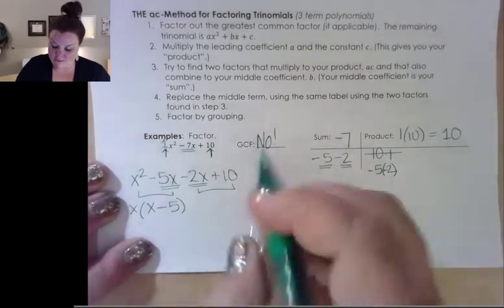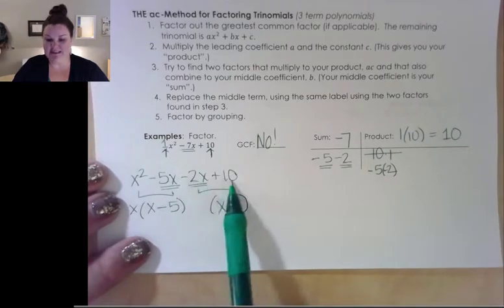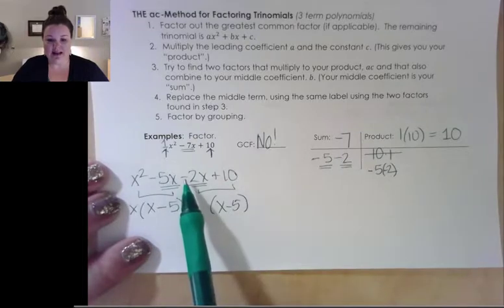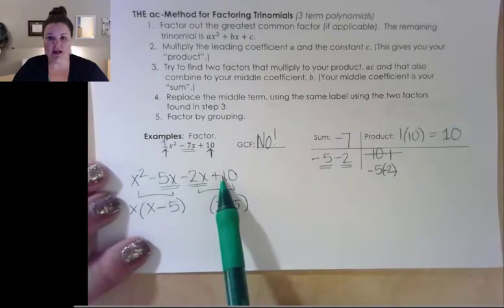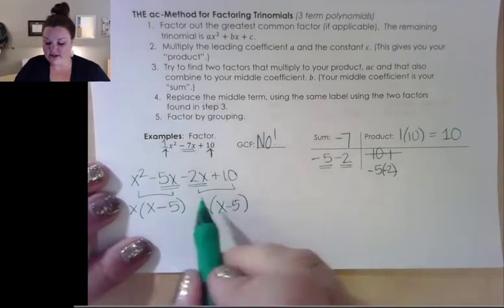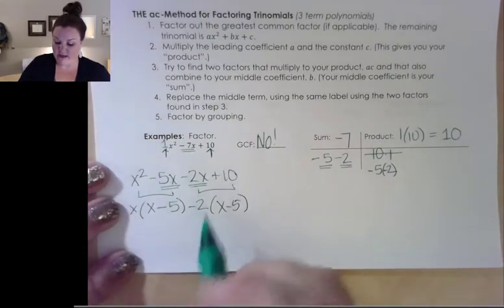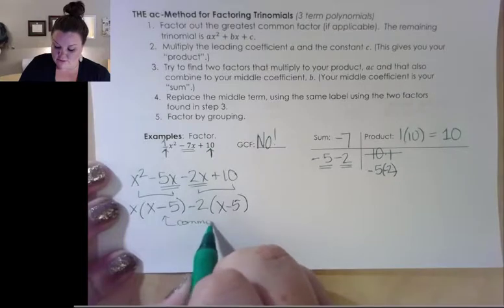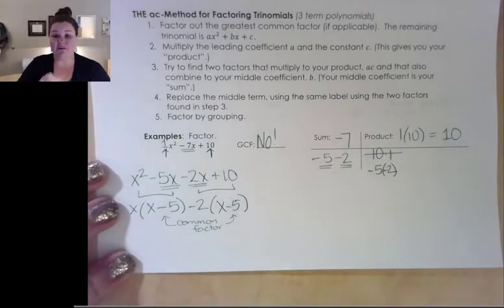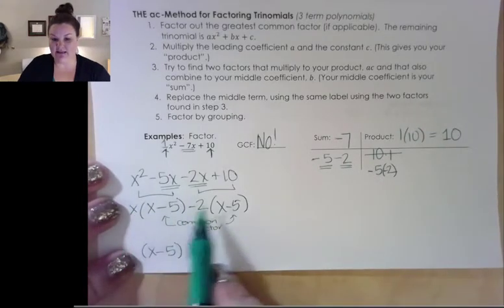Now I have four terms and I can do grouping. Out of the first two terms they have an x in common — x² divided by x leaves just x, and negative 5x divided by x leaves negative 5. When we do grouping, we always want our leftovers to match, so I'm hoping to be left with x minus 5. Looking at negative 2x and 10 — they're both divisible by 2, but I have a negative term and a positive term and I want to end up with a positive then a negative, so the signs need to flip. I'll take out a negative 2.